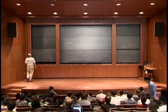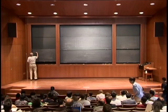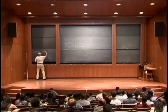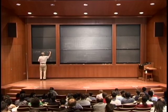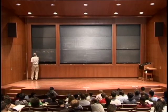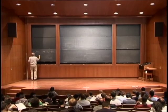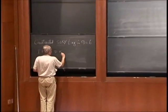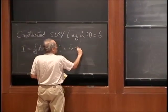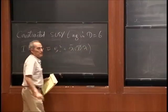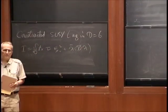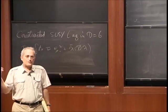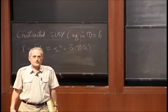We constructed this supersymmetric Lagrangian in D equals 6, which was just the Yang-Mills Lagrangian plus a minimal Lagrangian for a Fermi field. But there were a couple of gaps in what I told you yesterday, and I wanted to fill in those gaps.